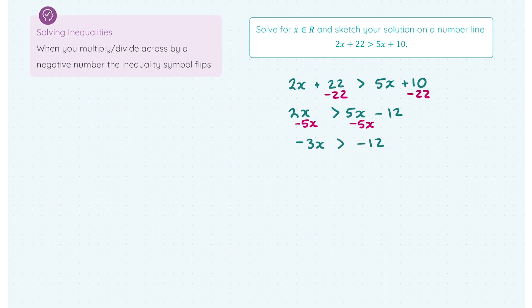Now I've -3x > -12 here. I'm going to divide both sides by -3. And I now know that when I do that, the inequality is going to flip. So I'm going to get x, flip the inequality to less than, and -12 ÷ -3 is 4. So now my solution here is x < 4.